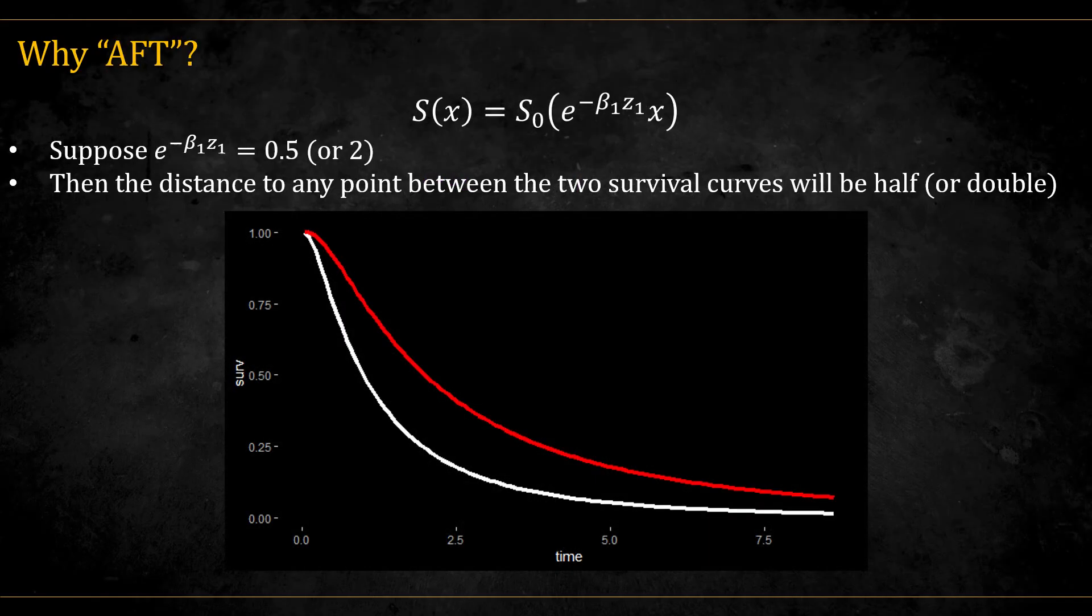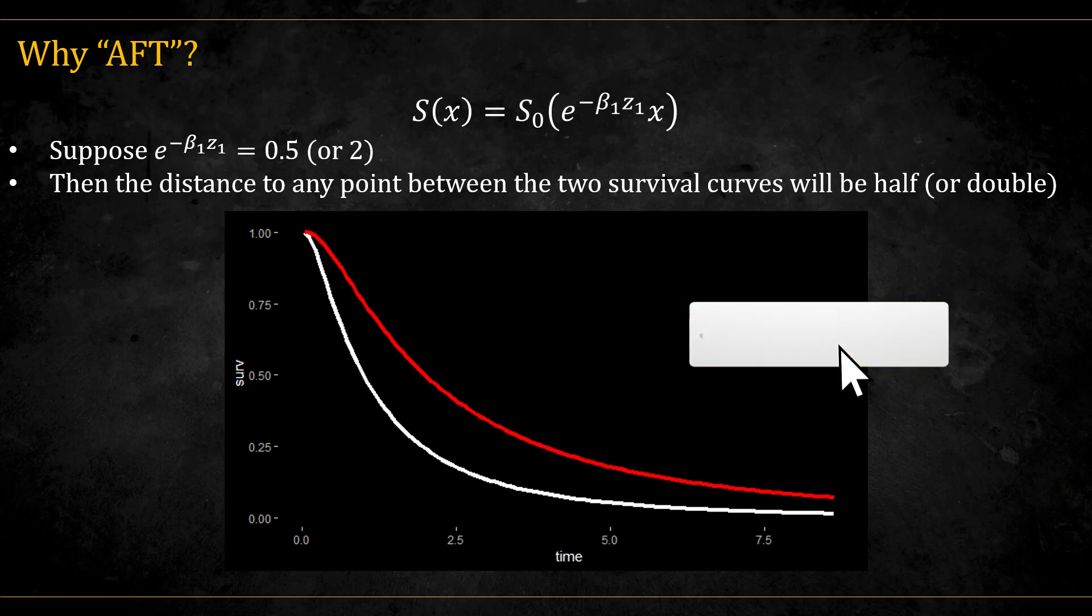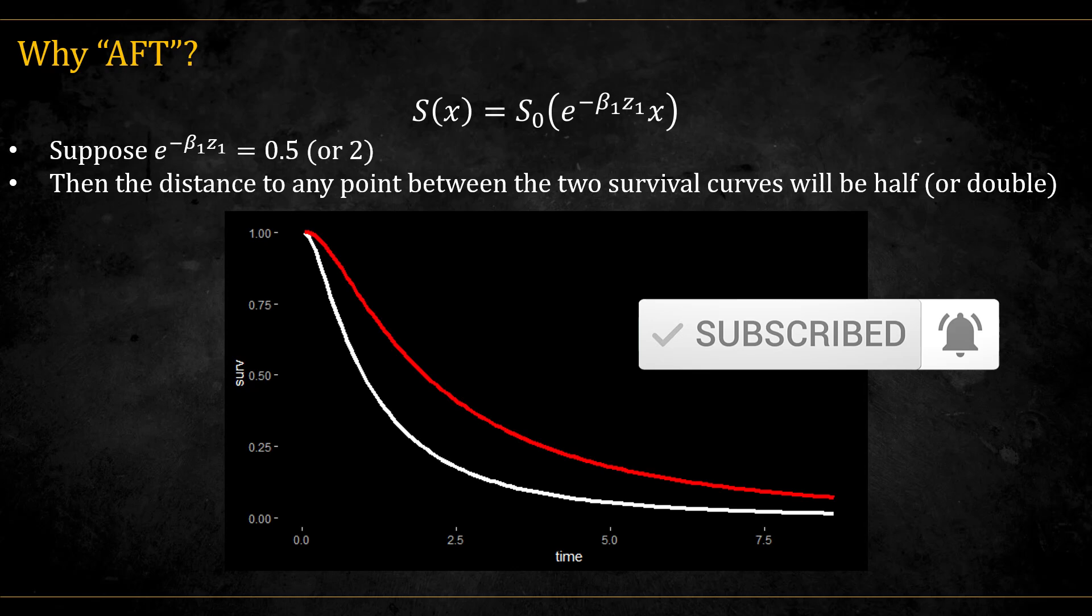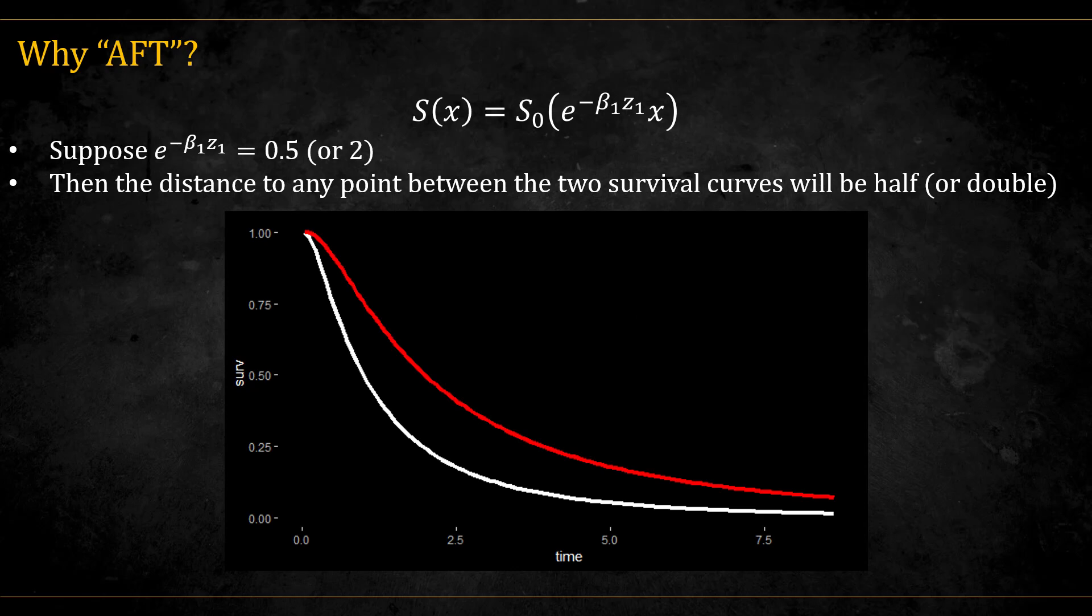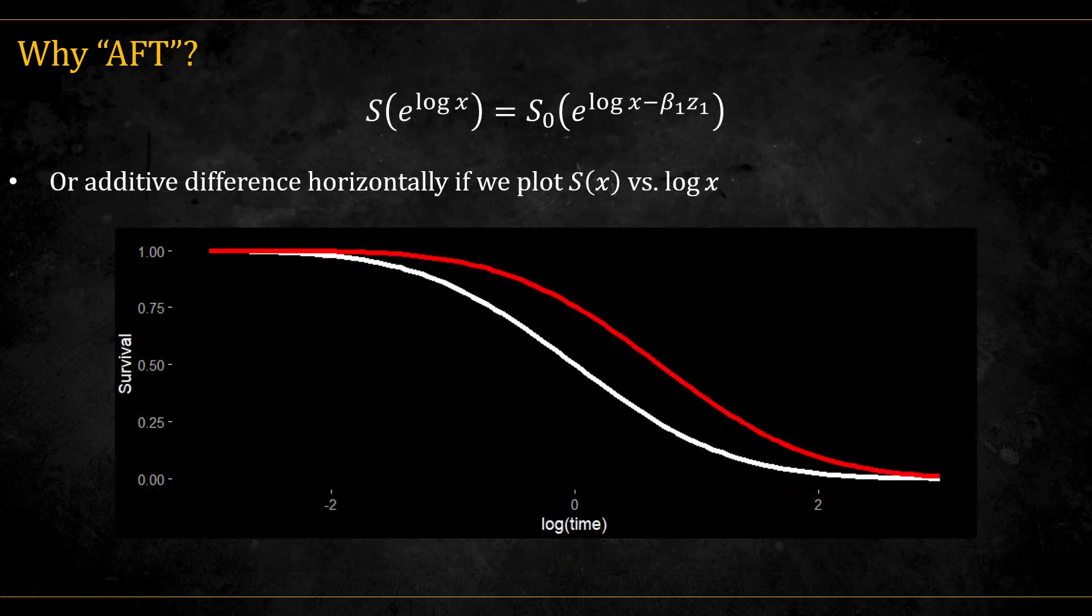Visually, if the factor is 0.5 or 2, then the distance between the two survival curves, when z is equal to zero versus when it's equal to one, is always half or double, depending on your reference curve. If we plot the survival versus the log of the time, we should see a constant difference between the curves.